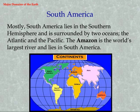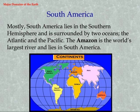South America lies in the Southern Hemisphere and is surrounded by two oceans: the Atlantic and the Pacific. The Amazon is the world's largest river and lies in South America.